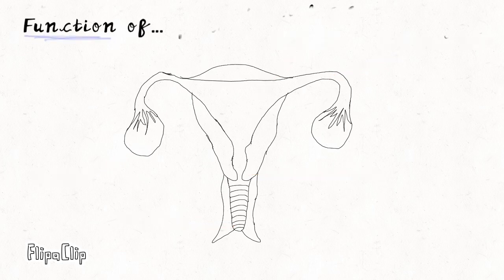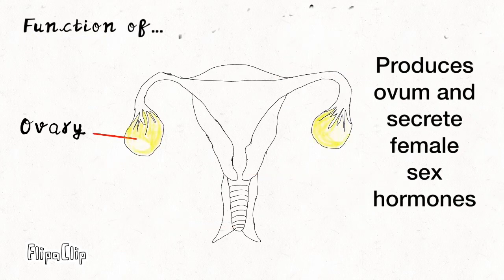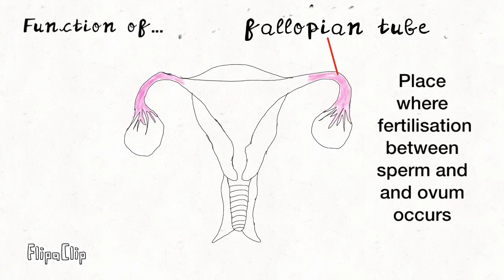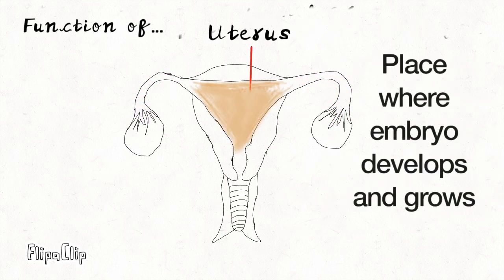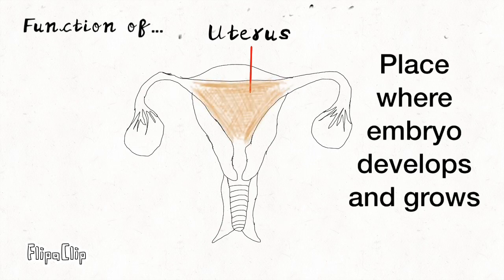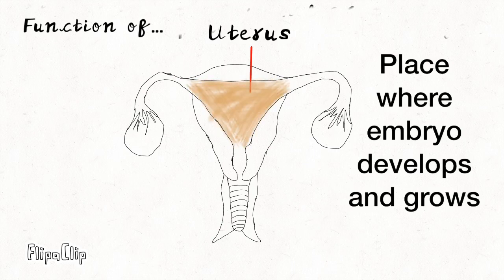Now let's talk about functions. The function of the ovary is to produce ovum and secrete female sex hormones. The function of the fallopian tube is to provide a place where fertilization between sperm and ovum occurs. The function of the uterus is to provide a place for the fertilized ovum to attach and soon become a developing and growing embryo.